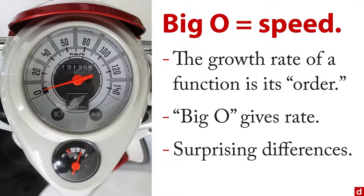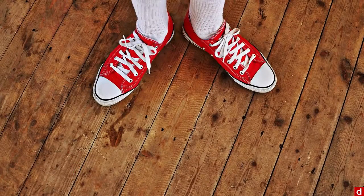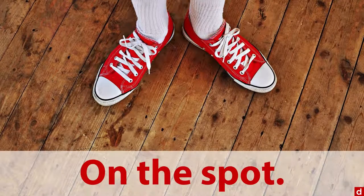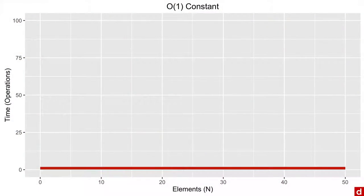And what's funny is there can be really surprising differences. Let me show you how it works with a few different kinds of growth rates or Big O. First off, there's the ones that I say are sort of just on the spot, you can get stuff done right away. The simplest one is O(1). And that is a constant order.